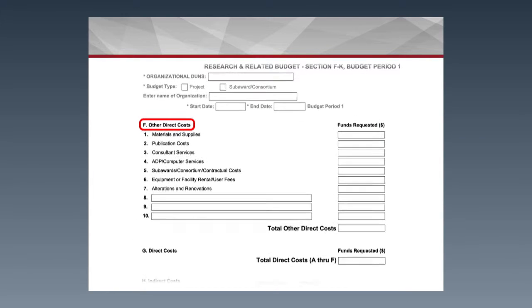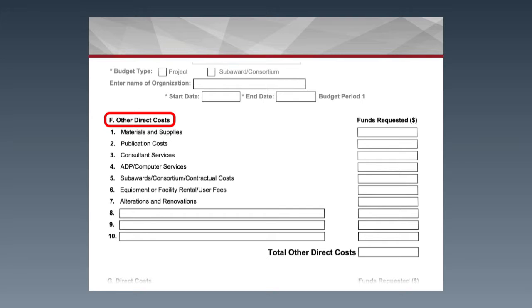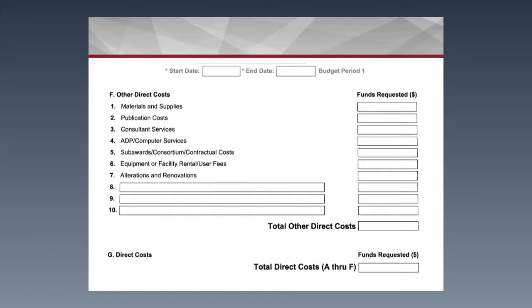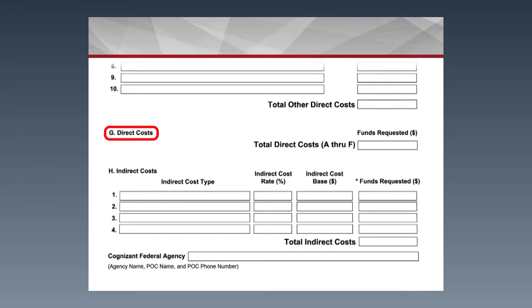Section F covers other direct costs, where you would put things like publications, supplies, consultants, and consortiums, listed in order. If nothing meets those listed criteria, you would use the blank lines in sections 8 through 10, and you can also add additional lines. Section G is simply the total of Sections A through F.